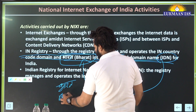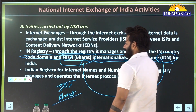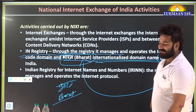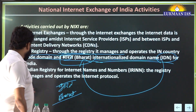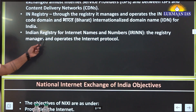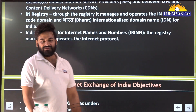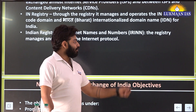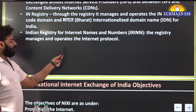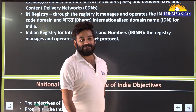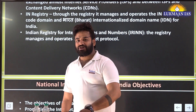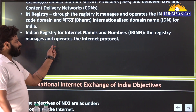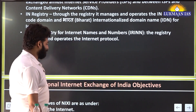The Internationalized Domain Name of India is 'Bharat' — not 'India', but 'Bharat'. Further, IRIN — Indian Registry for Internet Names and Numbers — manages and operates Internet Protocol addresses: both IPv4 and IPv6. All IP-related management is handled by IRIN.